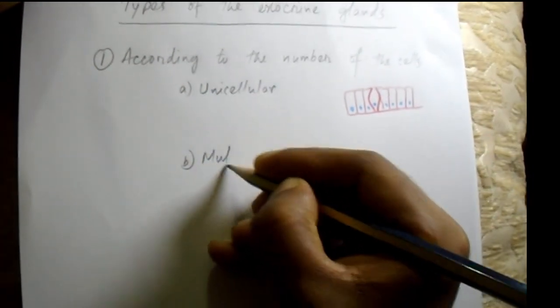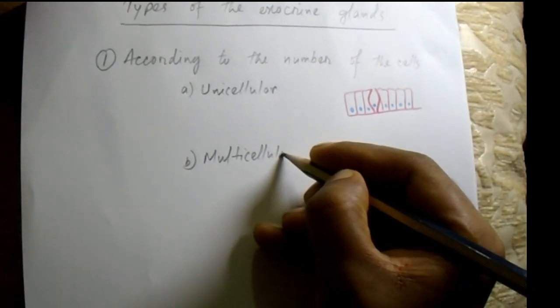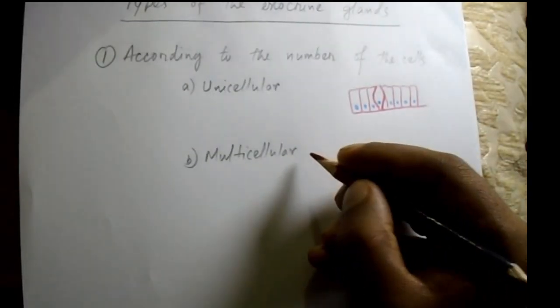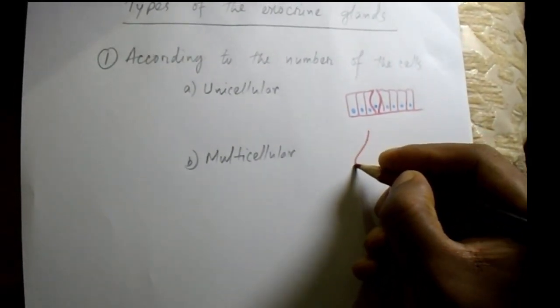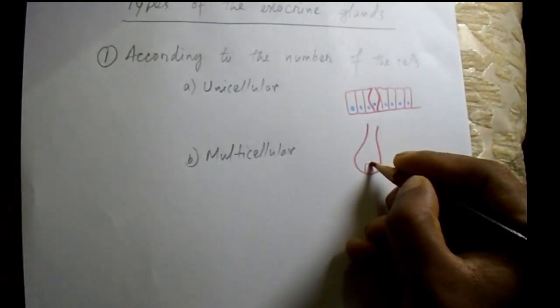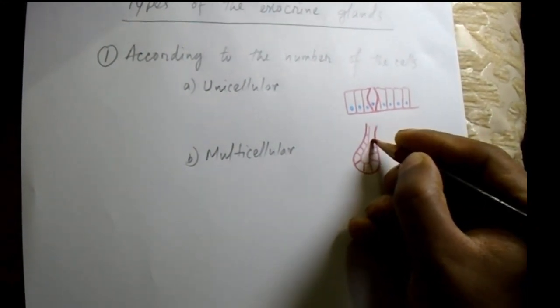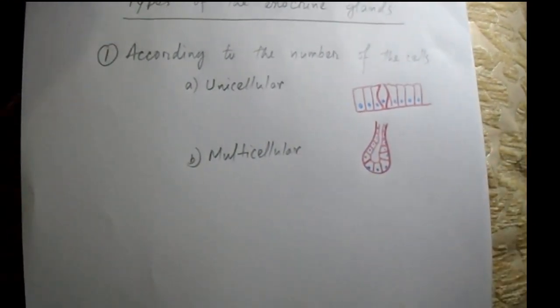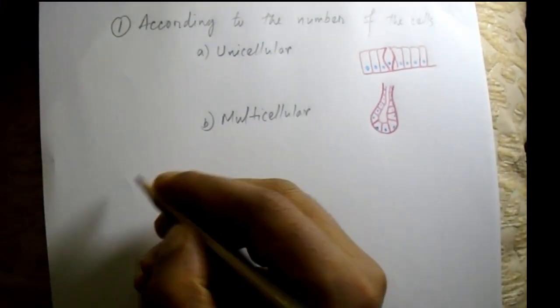The second type is multicellular. Most exocrine glands are multicellular in nature, meaning many cells are present within the gland. The gland contains an acinus and a duct, and all cells have nuclei.